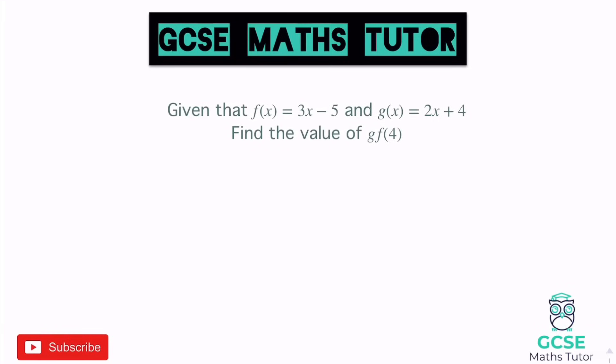It says, given that f(x) is 3x minus 5, and g(x) is 2x plus 4, find the value of gf(4). Now gf(4) essentially in words just means what does g equal when f is 4? So the first thing we have to find out is what is f(4), or inserting 4 into f. You've just got to be careful the way you read the language there, because g comes first, but we actually look at f to start with.